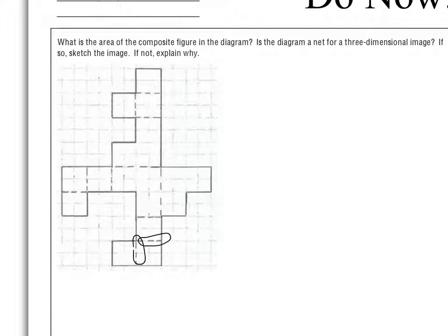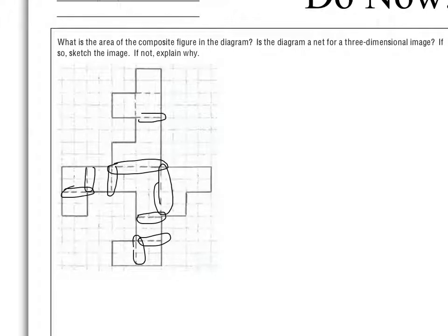One thing that will help you: when we have nets, a lot of times when you see dotted lines, those are where folds are. So if I tried to fold this along all of these dotted lines, am I going to end up with something that is a functional three-dimensional shape? Talk amongst your team about what the area is, how you figured it out, and whether or not this would be a three-dimensional shape.